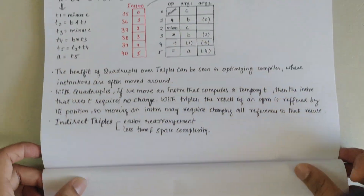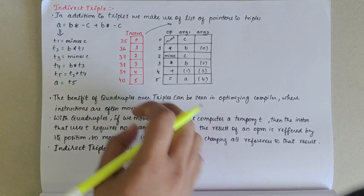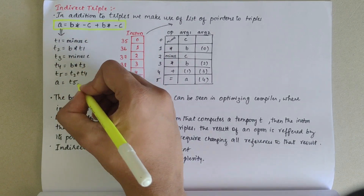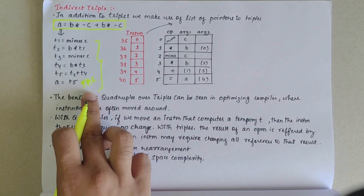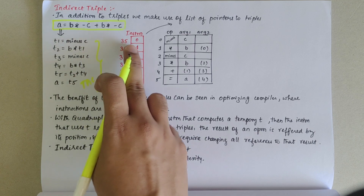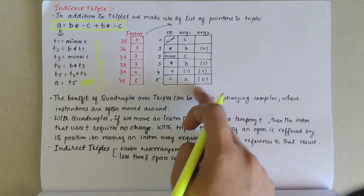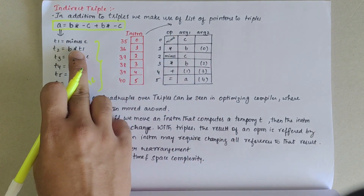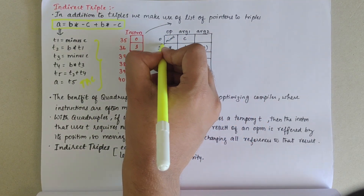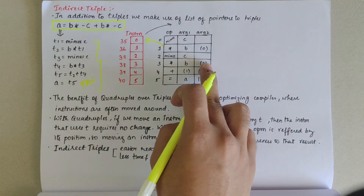Now we look into indirect triples. In addition to triples, we make use of a list of pointers to the triples. Consider the same expression a equals b star minus c plus b star minus c. We obtain the three address code and use an index table with instructions and memory values. Using a pointer table, we refer to the values — for example, minus c at index 0, then b star t1 where t1 is index 0.